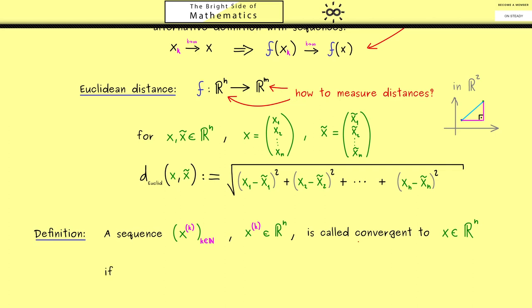Moreover, the potential limit point x is also a vector in Rⁿ. Now we say that the sequence is convergent to this point x in the space if for all ε > 0 we find an index capital K such that for all indices afterwards, the distance between the point x and x⁽ᵏ⁾ is less than ε. Of course, the distance function we use here is the Euclidean distance from above.